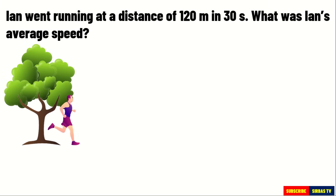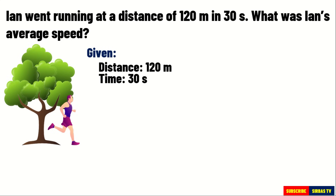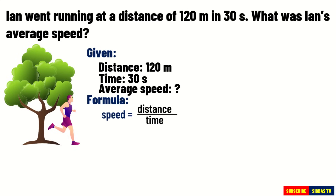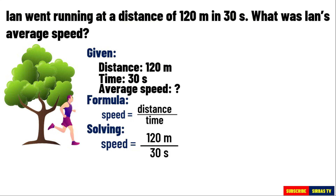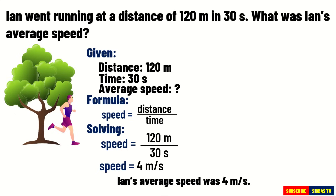Let's take a look at this problem. Ian went running a distance of 120 meters in 30 seconds. What was Ian's average speed? To solve this problem, let us take down the given data: 120 meters is the distance and 30 seconds is the time. Our task is to find the average speed of Ian. Using the formula speed equals distance over time, we substitute: speed equals 120 meters divided by 30 seconds, giving us 4 meters per second. The average speed of Ian is 4 meters per second.